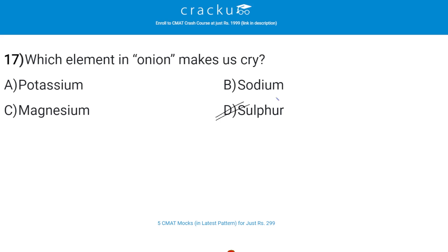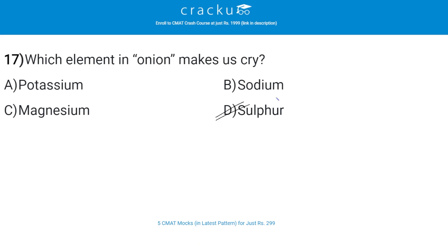Which element in onion makes us cry? The correct answer is D — sulphur. When an onion is sliced or diced, the onion cells release components into the air. Enzymes then alter the amino acids into compounds; this form of sulphuric acid irritates the nerves around the eye, making them tear.